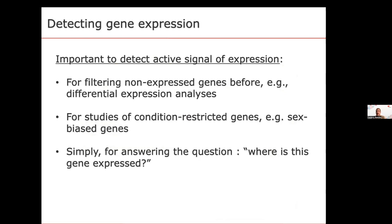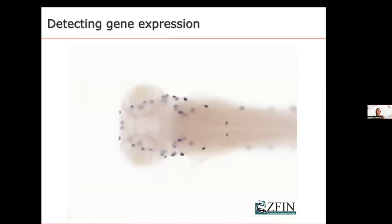Why is this important? When performing differential expression analysis, the first step is typically removing genes with very low expression, because you can't perform differential expression between conditions where a gene is absent in one. But there's no clear criterion for filtering these genes out. Also, if you study sex-biased genes, you want to identify genes expressed in males but not females, again without clear criteria. More simply, we want to answer: where is this gene expressed? This is what we want to provide in Bgee — the important expression pattern of your gene of interest.